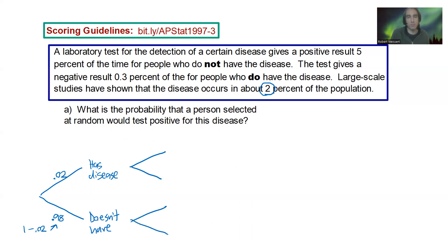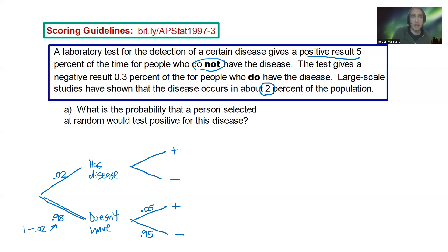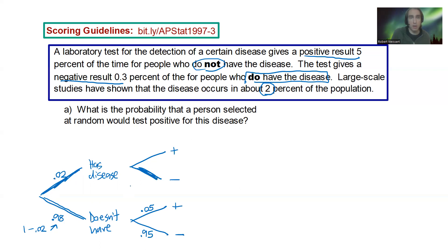From the first couple of sentences: a laboratory test gives a positive result 5% of the time for people who do not have the disease — so following the 'does not have' branch, we assign a 5% positive test rate, and 0.95 for negative. Then, the test gives a negative result 0.3% of the time for people who do have the disease. So following the 'has disease' branch, the negative result probability is 0.003, and 1 minus 0.003 equals 0.997 for a positive result.